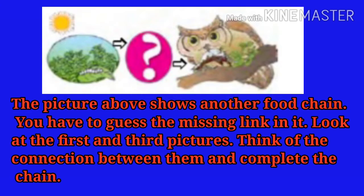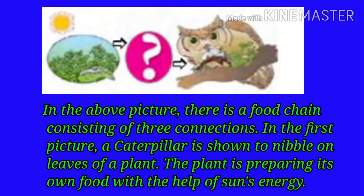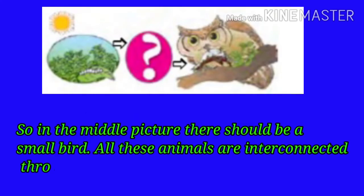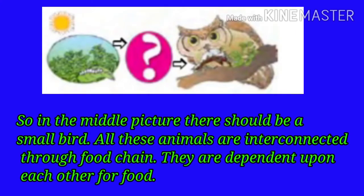The above picture shows another food chain. You have to guess the missing link in it. Look at the first and the third pictures and think of the connection between them to complete the chain. In the first picture, a caterpillar is shown to nibble on leaves of a plant. The plant is preparing its own food with the help of the sun's energy. The food prepared by the plant is taken up by the caterpillar. Such small caterpillars are eaten by birds. Small birds are hunted by birds like the owl. The owl is shown in the third picture, so in the middle picture there should be a small bird.